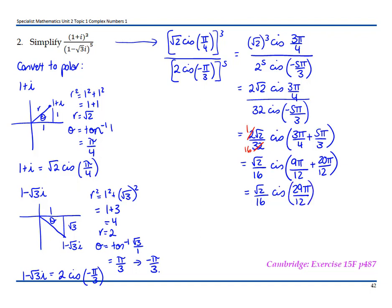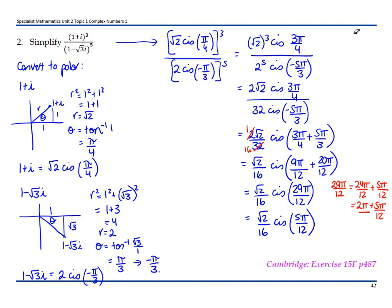29π/12 needs to be brought into the range 0 to π. So that's 24π/12 plus 5π/12, which is 2π plus 5π/12. Since 2π is a full rotation, we can rewrite this as √2/16 cis(5π/12). You might want to state that you've used De Moivre's theorem here.